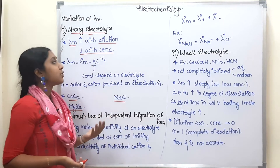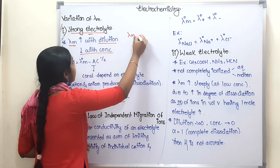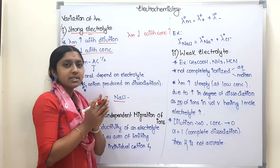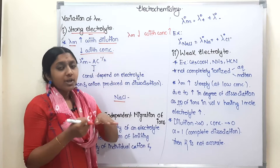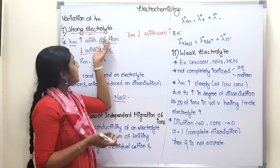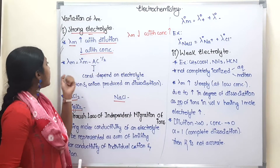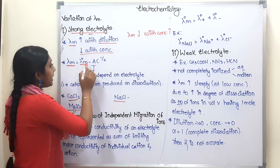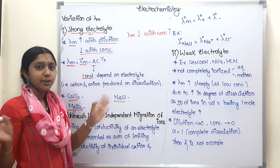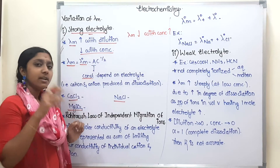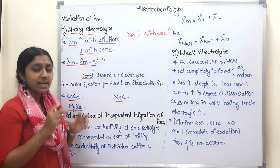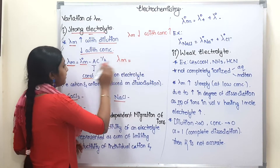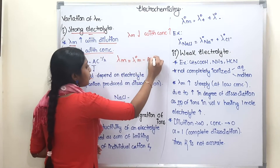For a strong electrolyte, lambda M decreases with concentration and increases with dilution. The formula for this is: lambda M equals lambda naught m minus A root C, where lambda naught m is the limiting molar conductivity, A is a constant, and C is the concentration to the power 1/2. We are talking about the cation and anion values and their charges.